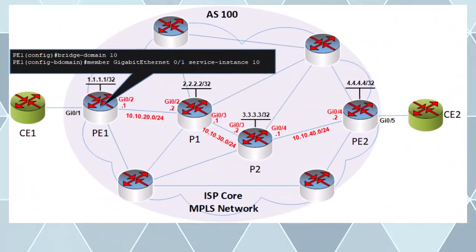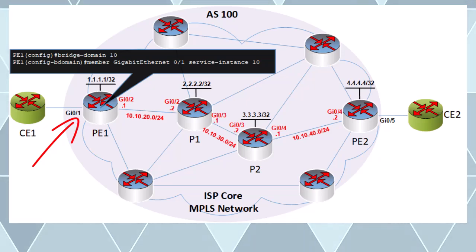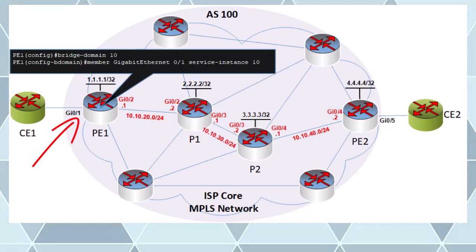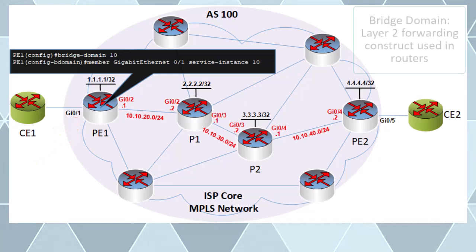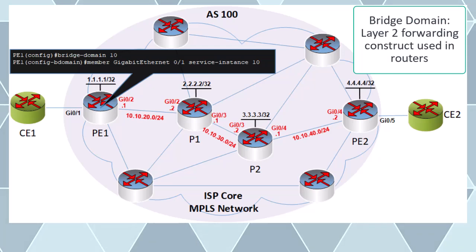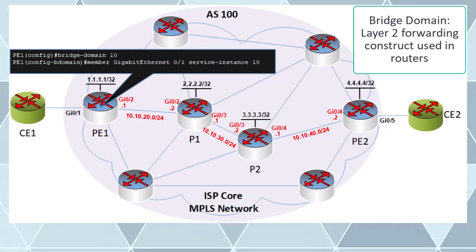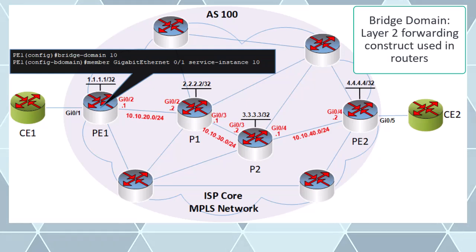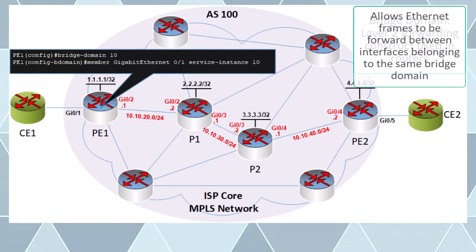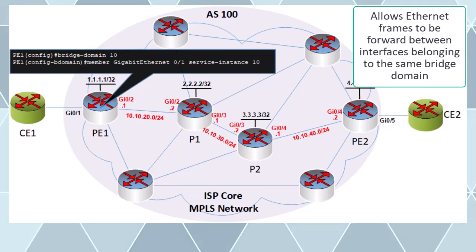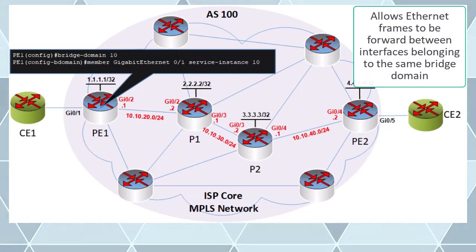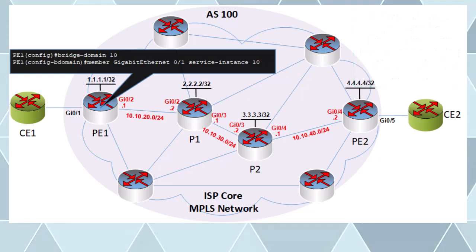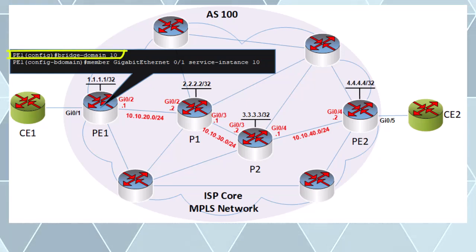Next we have to configure the customer-facing interface to operate on Layer 2. To do so we must create what is known as a bridge domain and assign it an ID. A bridge domain is a Layer 2 forwarding construct similar to a VLAN but used on routers. It allows Ethernet frames to be forwarded between interfaces that belong to the same bridge domain, either locally on the same router or across the MPLS core. To create the bridge domain we must first assign a bridge domain ID.